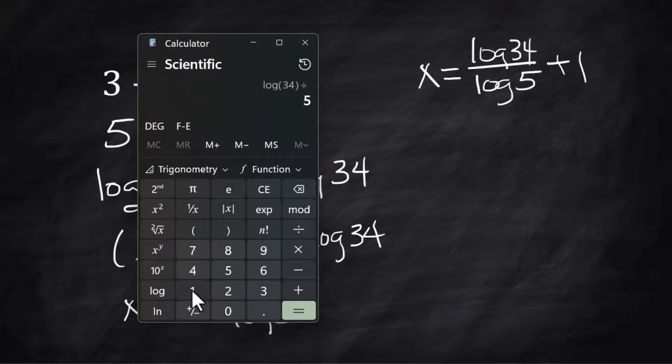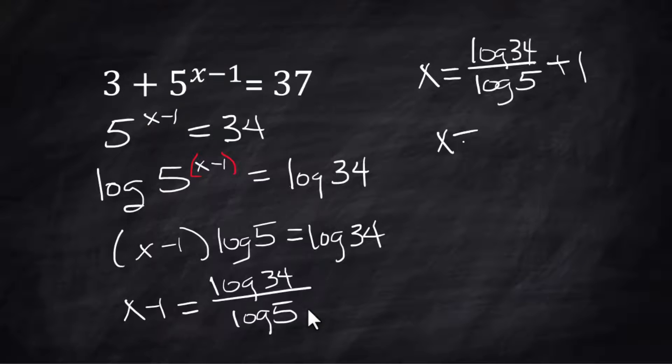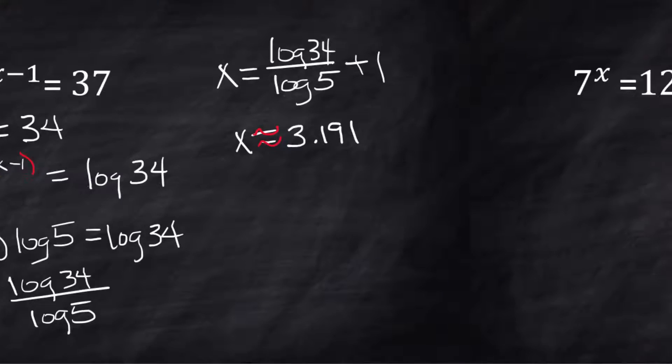log(34) divided by log(5), I get an answer, add 1 to it. My decimal approximation is 3.191. x is approximately equal to that.